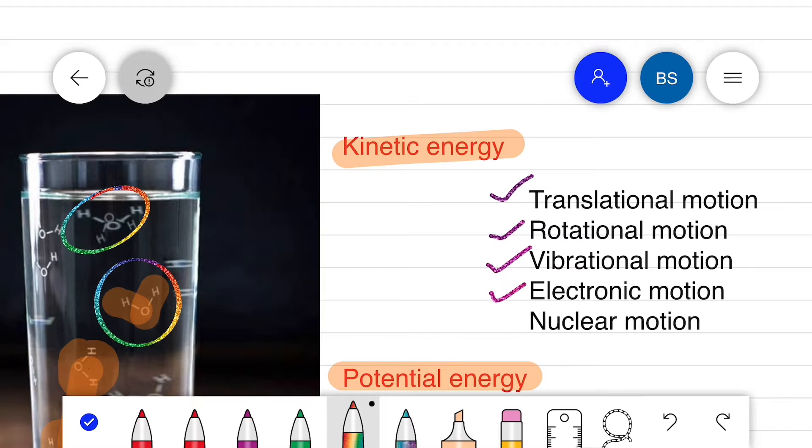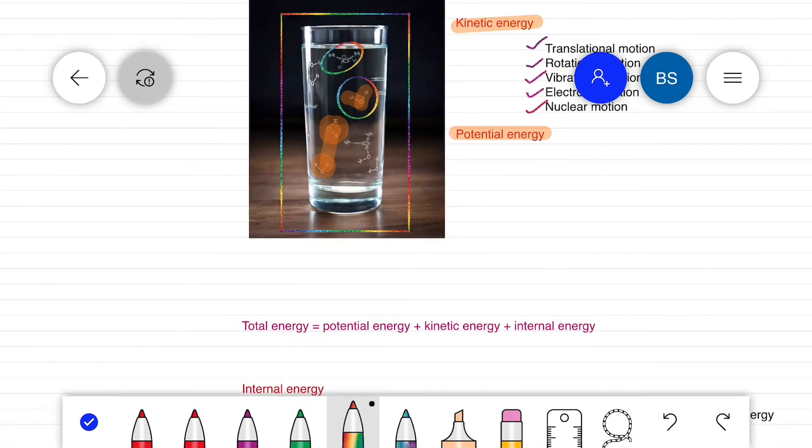One system of total energy involves that system's whole potential energy, that system's whole kinetic energy, plus the molecular motion of the system. This energy is called internal energy. These energies make up the total energy of the system.